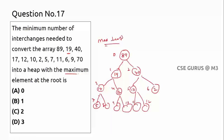Continue inserting elements: 11 is less than its parent — true. 6 is less than its parent — true. 9 is less than its parent — true. Remember, you only check each element against its parent, not against other nodes like 11 vs. 17.